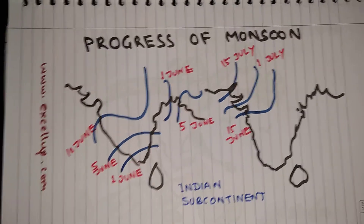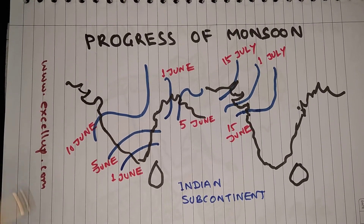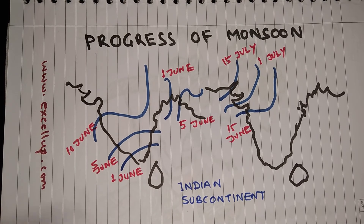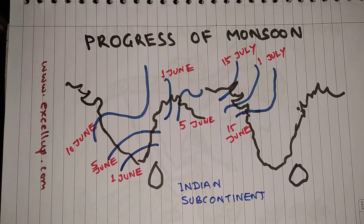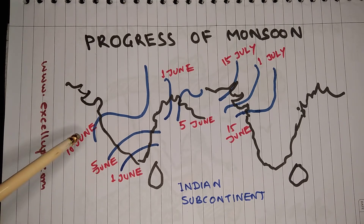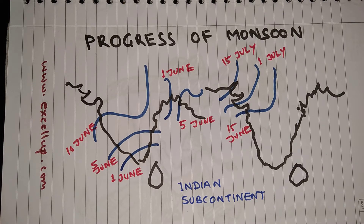Now let us see the progress of monsoon throughout the country. Monsoon hits the southern coast of India in the first week of June — that is, monsoon arrives at Kerala around the first of June. By the fifth of June, monsoon advances towards the north, then it bifurcates into two branches.